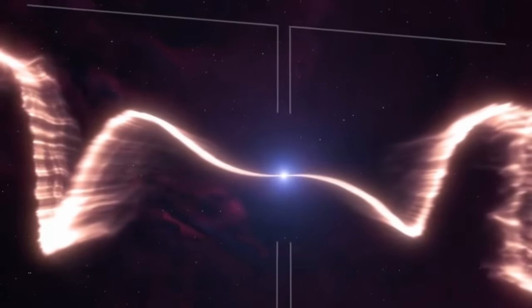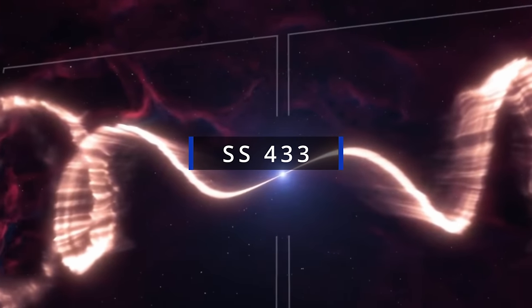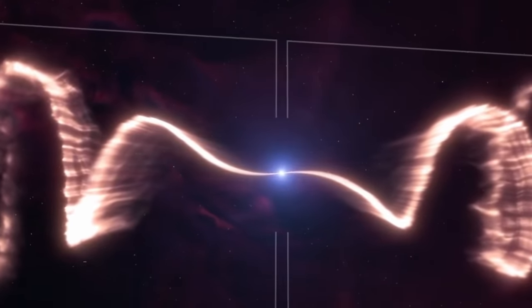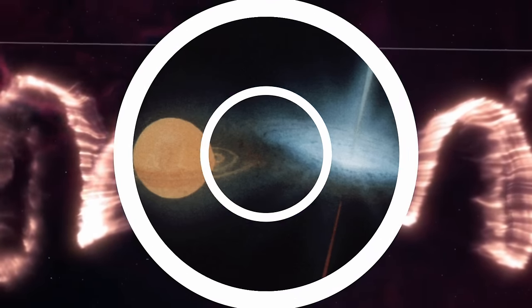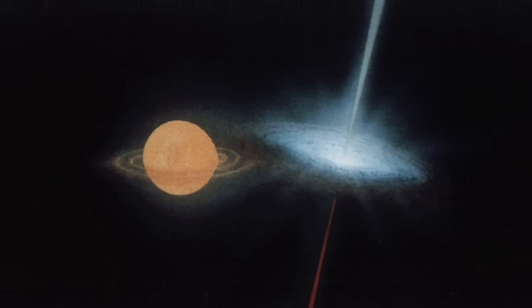Today we're going to discuss a very unique object right here in the Milky Way galaxy, an object referred to as SS433, one of the most exotic star systems ever seen. An object that's made out of two parts,